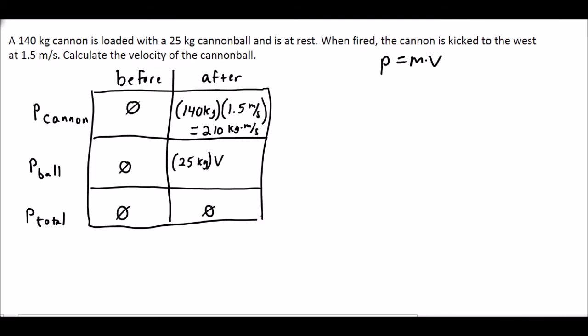Now we just need to use algebra to solve. We know that these two together need to equal zero. So we will take the 210 kilogram meters per second of the cannon, add that to the momentum of the cannonball, which we don't quite know, and all that is equal to zero.